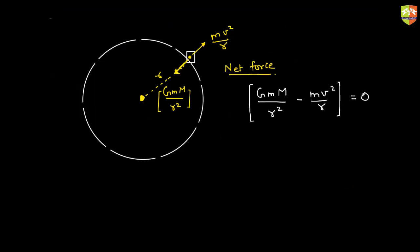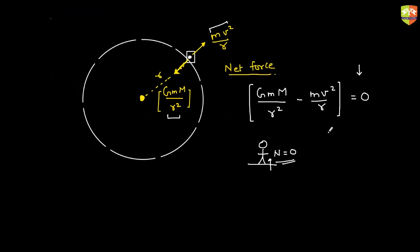The net force is zero, so the object inside will not experience any net force. Individually there are forces — gravity and centrifugal — but they add up to zero. When you place your feet on the floor of the spaceship, the spaceship exerts zero normal reaction because the net force is already balanced and normal reaction is not required. If normal reaction is zero, it is like a free-fall situation — weightlessness. You will not feel any pull toward the Earth. This is what weightlessness is about.